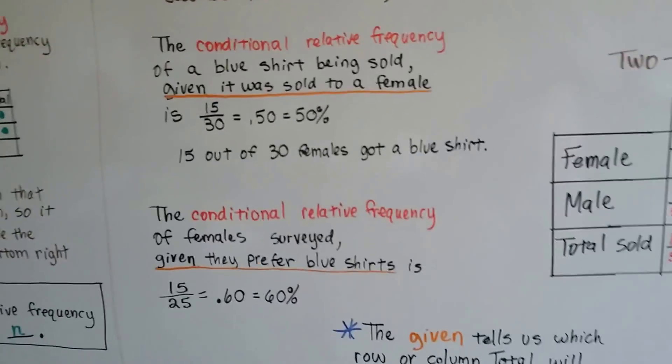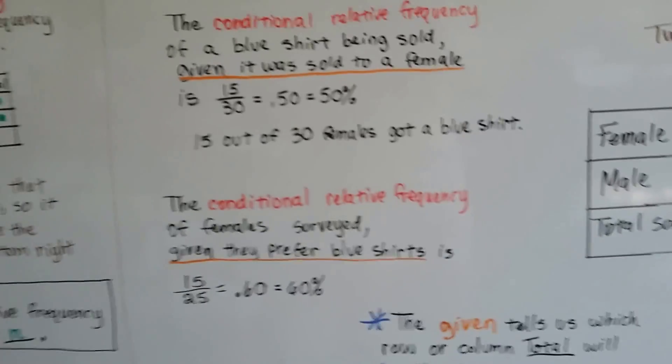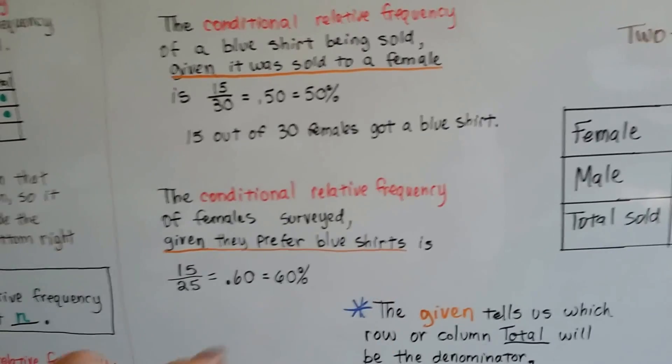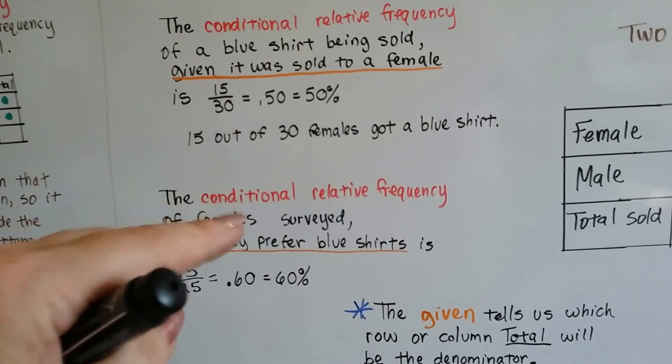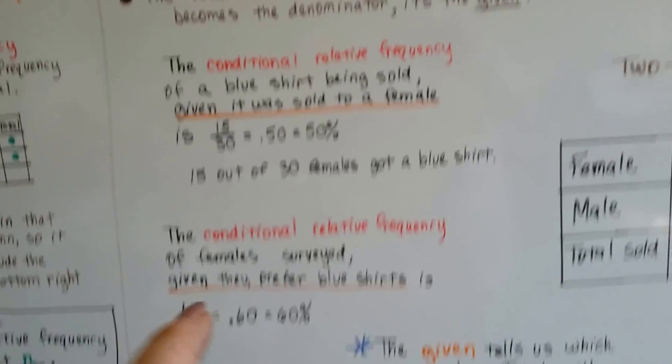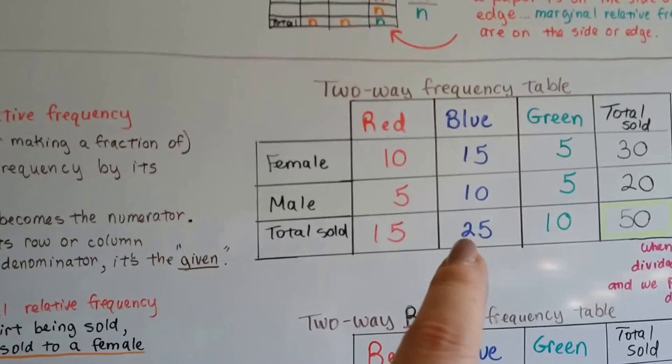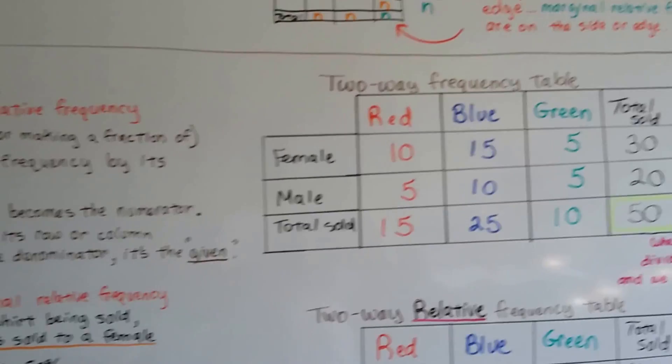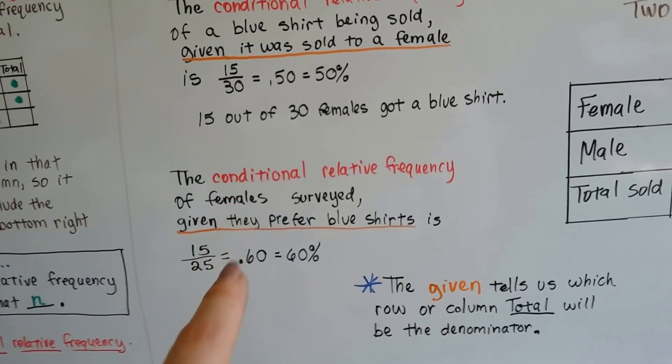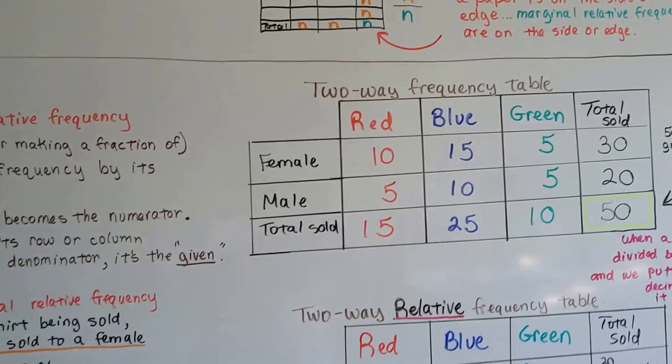Now, look what happens when we flip it over to the other way. Now we've got females first, and the given is blue shirts. It's flipped from that one. So now we know that the total of blue shirts is going to be our denominator. So we look up here for the total of blue shirts is 25, and we know the 25 is our denominator. And that the females are going to be the numerator. So how many females got a blue shirt? 15.